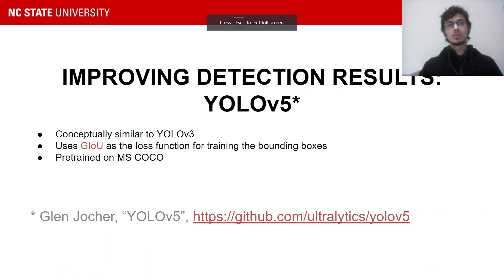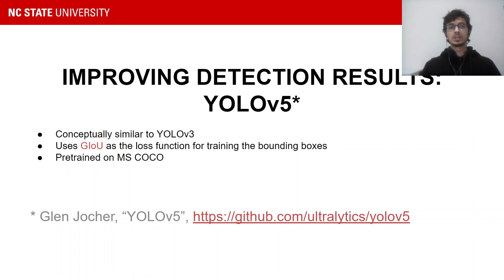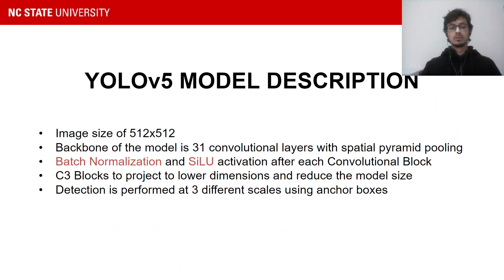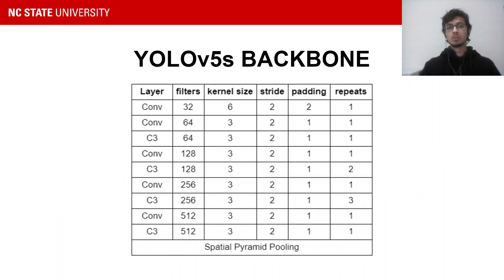We improve our results using the YOLO V5 architecture. YOLO V5 is conceptually similar to YOLO V3 with optimizations to training strategies. It uses the generalized YOLO loss to train the bounding box predictions. We use an image size of 512 x 512 and a backbone of 31 convolutional layers, followed by batch normalization and C2 activation. The C3 block uses projections to lower filter sizes to reduce the size of the network while still maintaining model performance. This figure shows our backbone model.